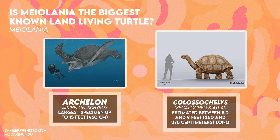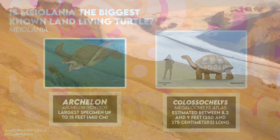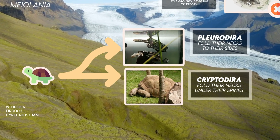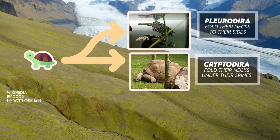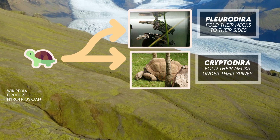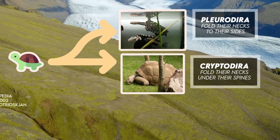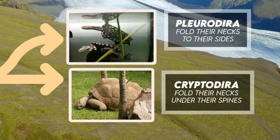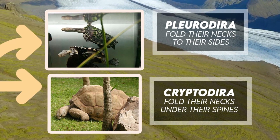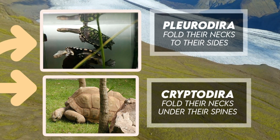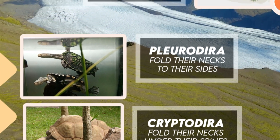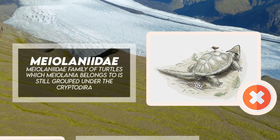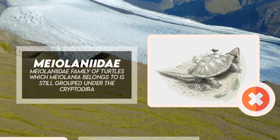Although we know that Myolania was a turtle, we still don't know what type. Turtles are classified as either being members of the Cryptodira, which fold their necks under their spines, or the Pleurodira, a group of turtles that fold their necks to their sides. However, Myolania couldn't do either of these things because of the arrangement of spikes on top of its skull that would have prevented the head from sliding under the shell. Despite this, the Myolanidae family of turtles, which Myolania belongs to, is still grouped under Cryptodira.